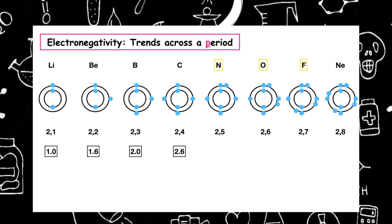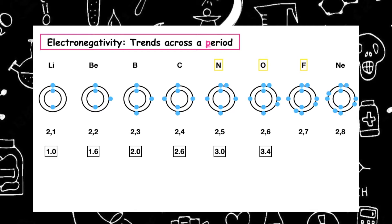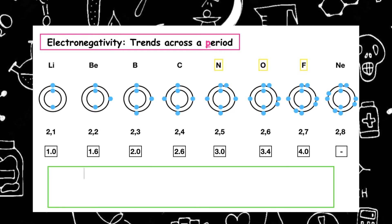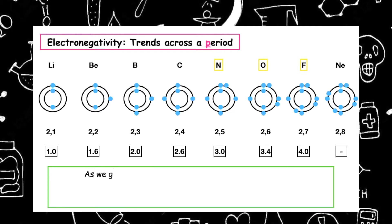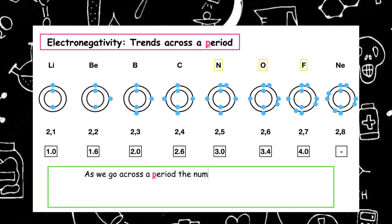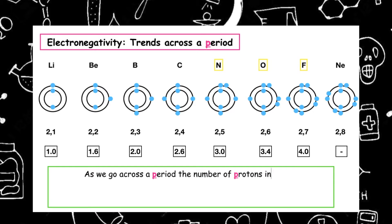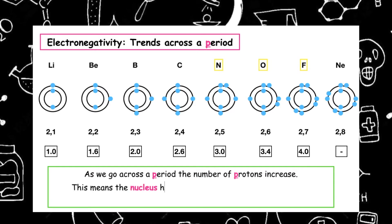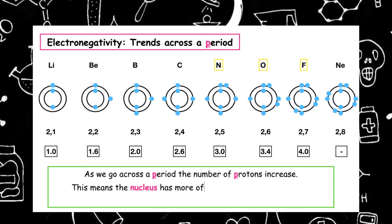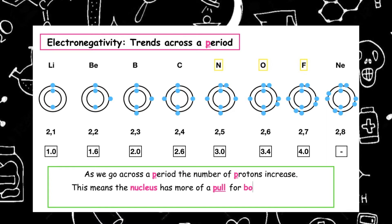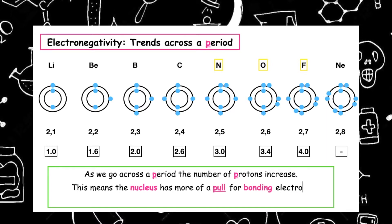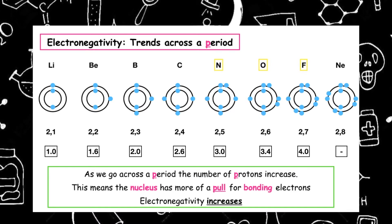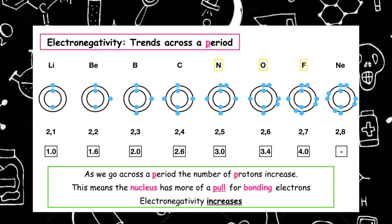So we must be interested in the number of protons inside the nucleus. As we go across a period, the number of protons increases. This means that the nucleus has more of a pull for the bonding electrons, and hence why the electronegativity increases.